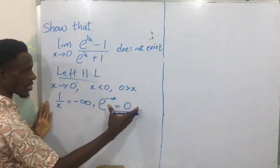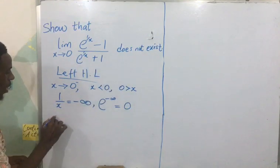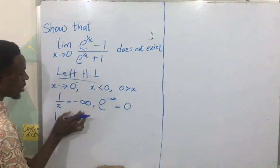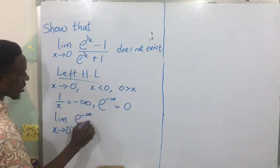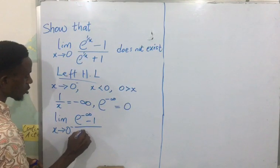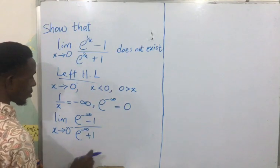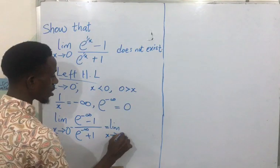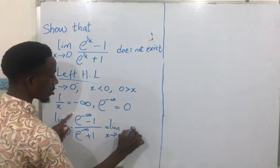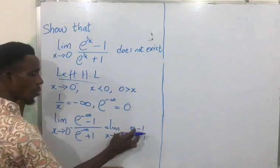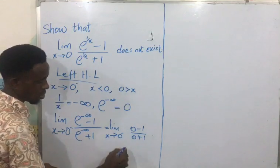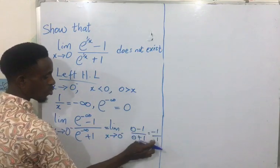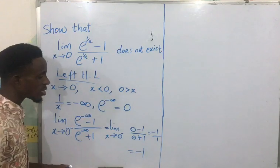Using these two points, I substitute into the function. The limit as x approaches 0 minus of e^(1/x) gives: e^0 minus 1 over e^0 plus 1, which is 0 minus 1 over 0 plus 1, that is minus 1 over 1. So the left-hand limit equals minus 1.